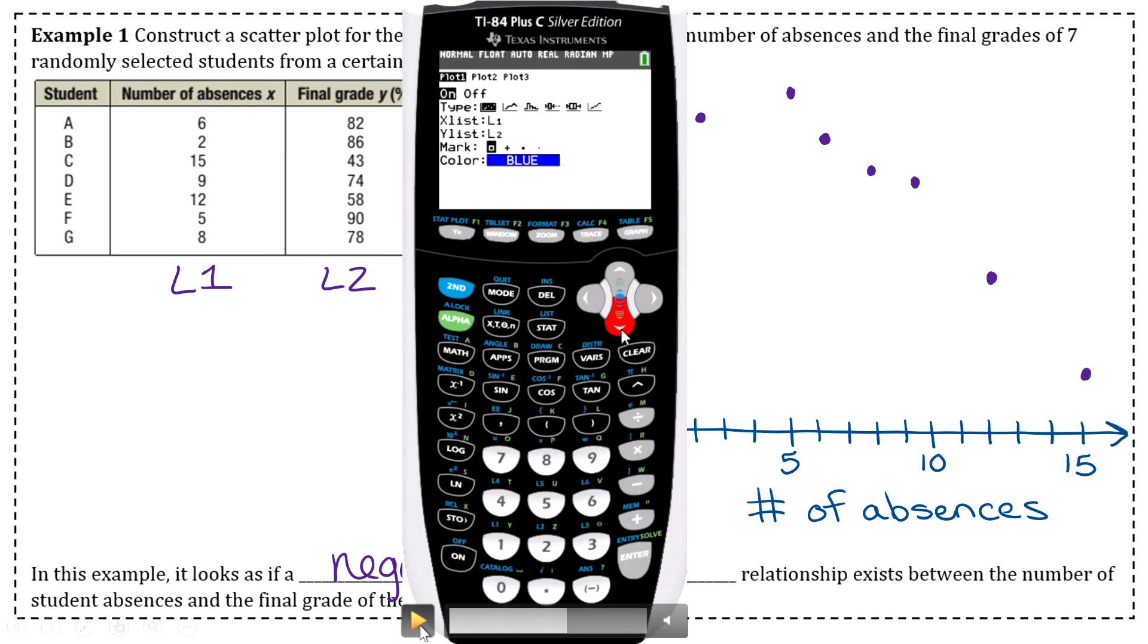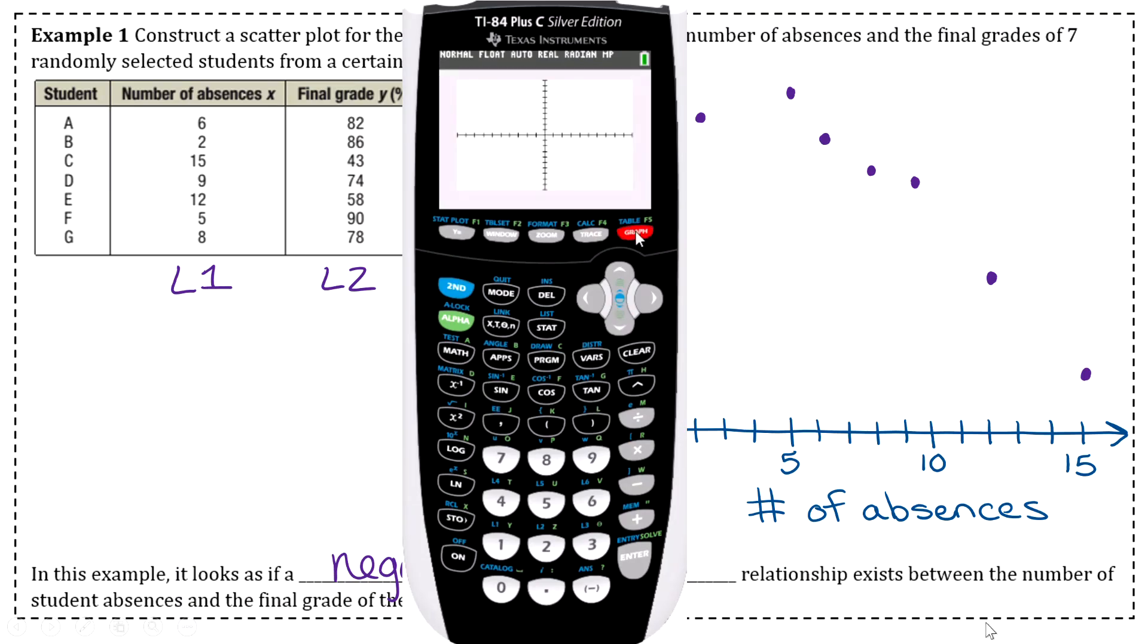Then we're going to graph it by clicking graph in the top corner. Your scatter plot should come up. If your graph looks empty, the window isn't right. The easiest way to fit the window to your data is to go to zoom—the middle button—then go down to zoom stat, number nine. It will automatically fit the window perfectly around your data.